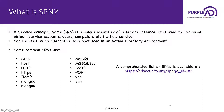Some of the common SPNs are listed here: CIFS (Common Internet File System), host, HTTP, HTTPS, MongoDB, SMTP, POP, MS SQL servers, VNC, and VPN. If you want a comprehensive list of SPNs, you can check out the page on adsecurity.org, where you can find a list identified by Sean Metcalf.